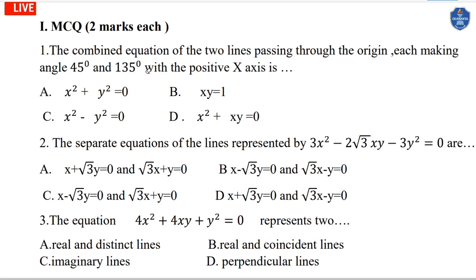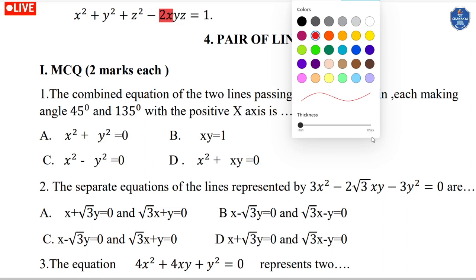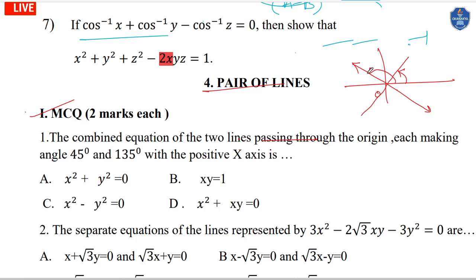This topic covers combined equations of a pair of lines passing through the origin making 45 degrees. A line at 45 degrees has a slope of 1, and a line at 135 degrees is in the second quadrant, so it has a slope of minus 1.